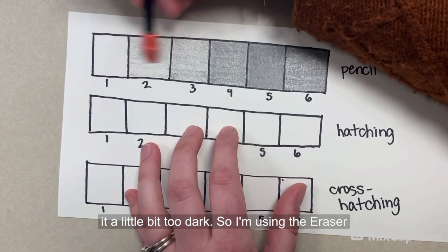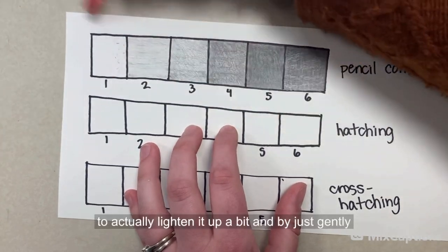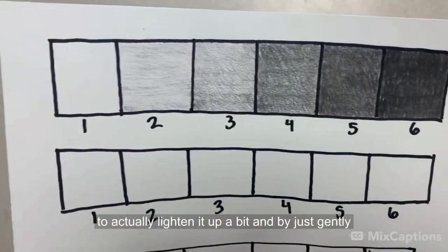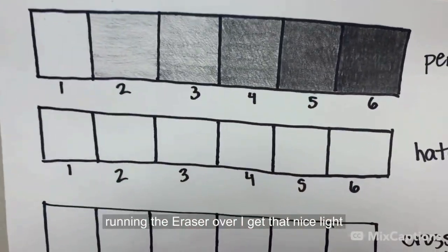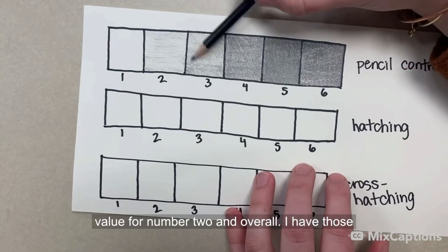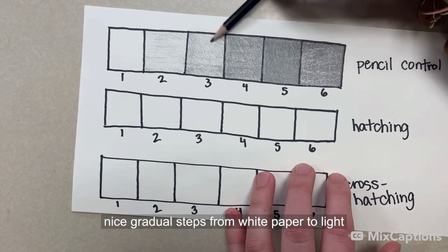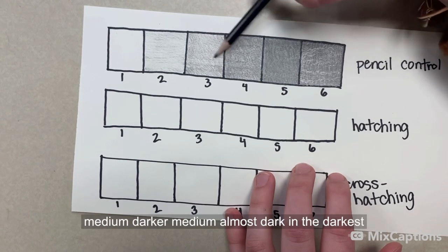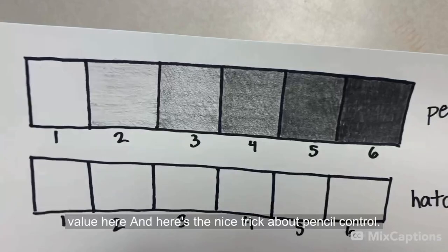I made it a little bit too dark. So I'm using the eraser to actually lighten it up a bit. And by just gently running the eraser over, I get that nice light value for number two. And overall, I have those nice gradual steps from white paper to light, medium, darker medium, almost dark, and the darkest value here.